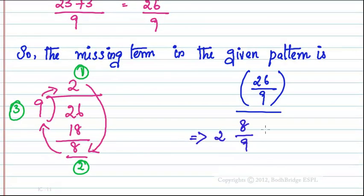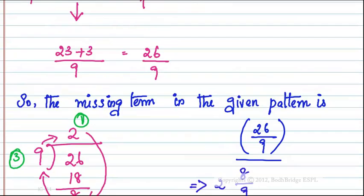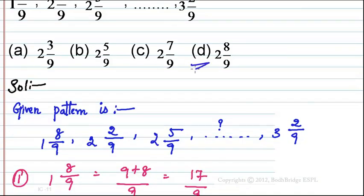We can write 26/9 as the mixed fraction 2 and 8/9. So the answer is Option D: 2 and 8/9.